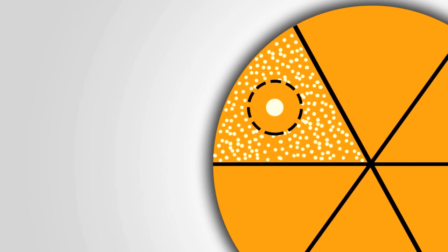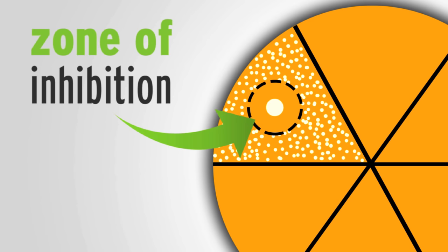The area with no bacterial growth surrounding the disc is called the zone of inhibition, and by looking at the size of this region, the researcher can say if the strain is susceptible or resistant to a certain antibiotic.